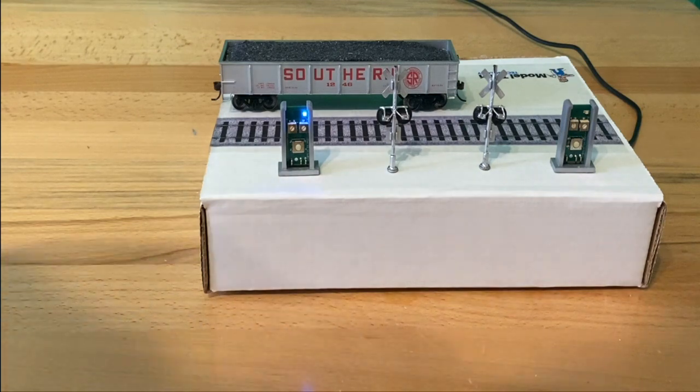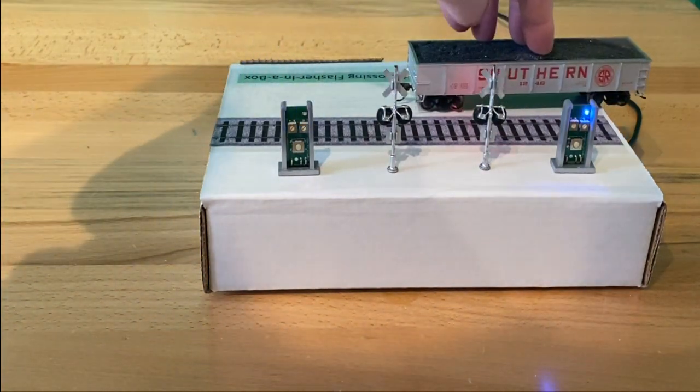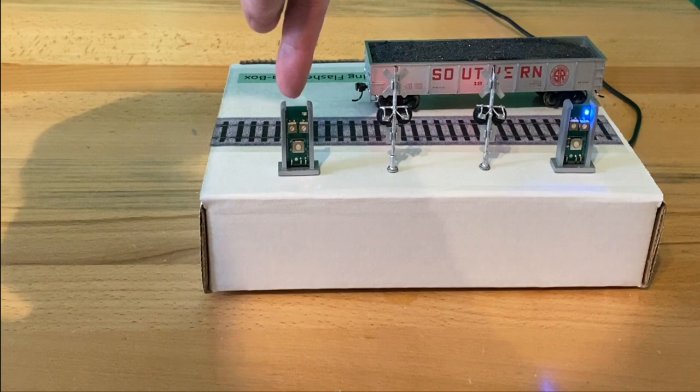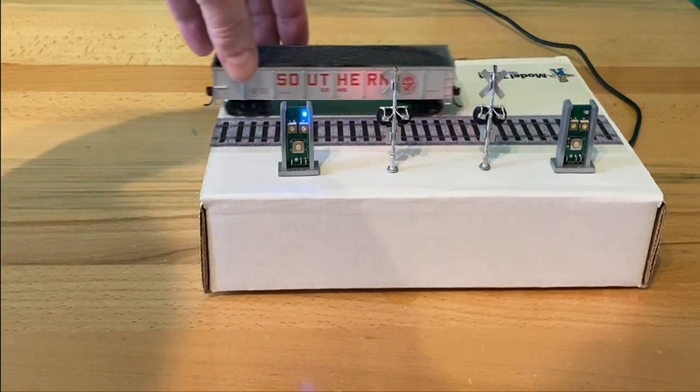And it's set. So if the train car pulls away, you can see that this sensor went off, turned off, and it comes back on.